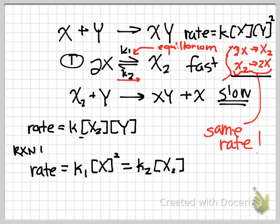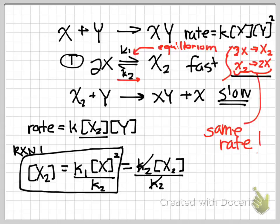When I do this, I can now solve for my unknown in terms of X. And so if I divide both sides by K2, now I have an expression that X2 equals K1 over K2 times X squared.